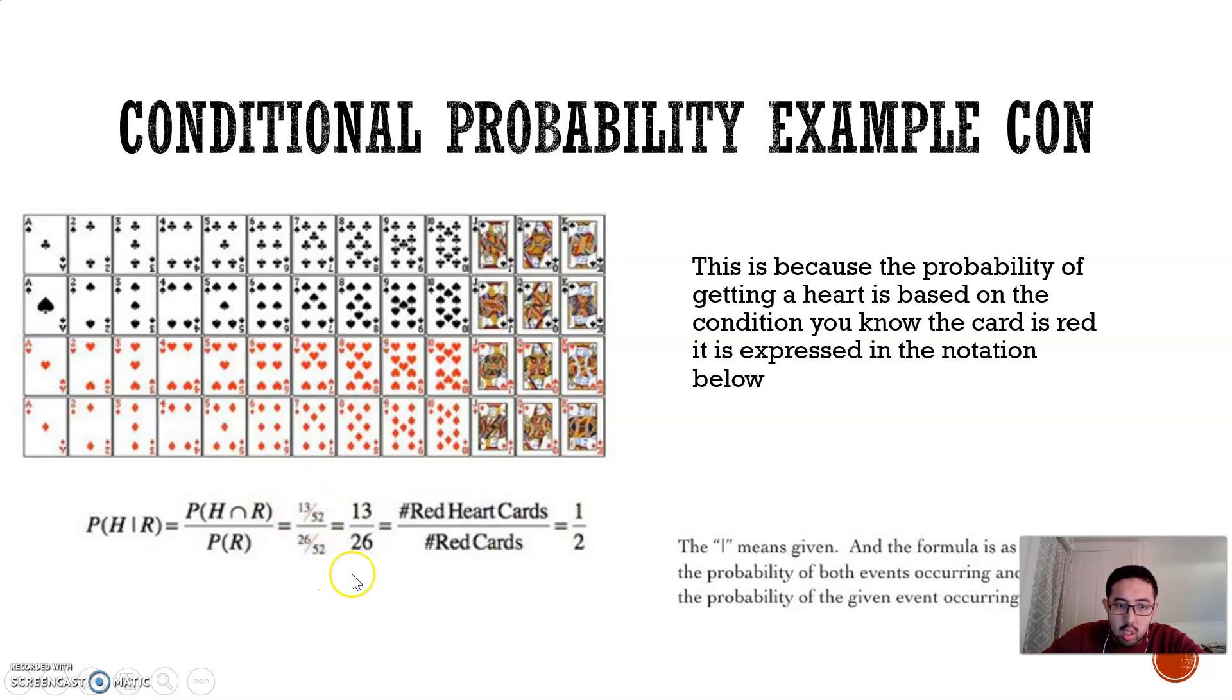Well, you simplify that to 13 over 26, which is one half. Red heart over red. That's one half. This is an example of a conditional probability statement.